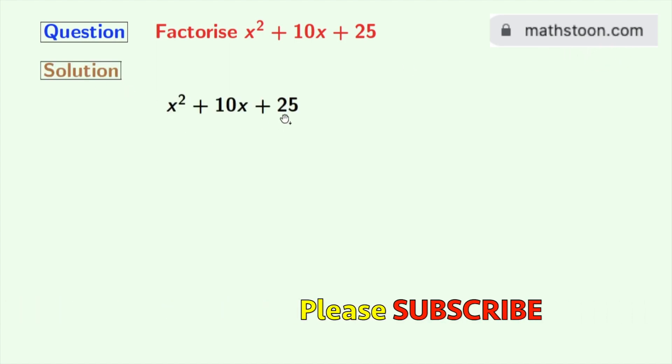This is our given polynomial. Now at the first step we will rewrite 10x as 2 times x times 5, and 25 as 5 squared, and x squared remains same.